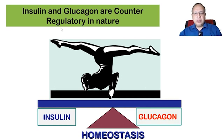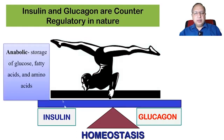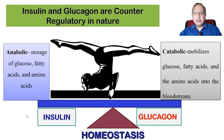We have two major hormones released by the endocrine pancreas — insulin and glucagon — and they are counter-regulatory to each other. Insulin is anabolic and helps in the storage of glucose, fatty acids, and amino acids. Glucagon, on the other hand, is catabolic — it mobilizes glucose, fatty acids, and amino acids into the bloodstream, causing an increase in blood glucose level, while insulin causes a decrease.